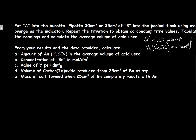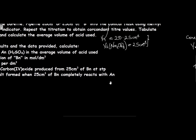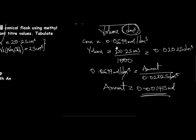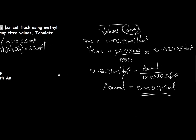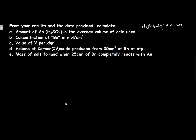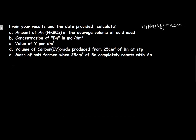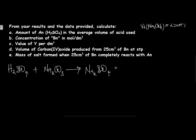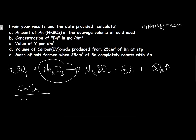We go to the next question: calculate the concentration of BN in mole per dm³. As long as we have the concentration of AN, the average volume of acid used, and the volume of the base, we can find the concentration of BN, which is your basic salt. From the equation for the reaction, we have tetraoxosulfuric acid reacting with sodium tetraoxocarbonate IV. When an acid reacts with a carbonate, it gives you the salt of the acid — sodium sulfate — plus water plus carbon dioxide gas. To calculate the concentration, we use the formula: CₐVₐ / CᵦVᵦ = Nₐ / Nᵦ.